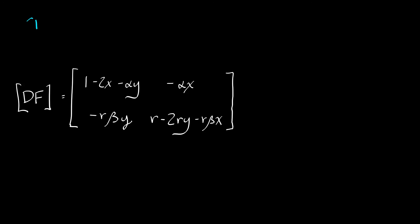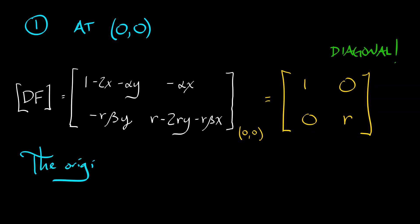Let's start with the origin. If we take that derivative that we computed, evaluate at X equals 0 and Y equals 0, then the matrix we get has entries 1, 0, 0, and R. This is a diagonal matrix. We can see what the eigenvalues and eigenvectors are clearly. This means that the origin is always a source.